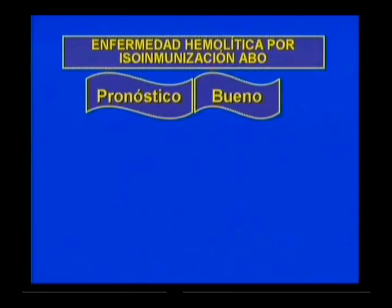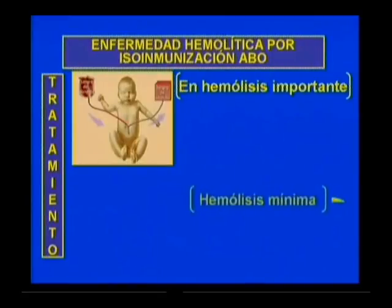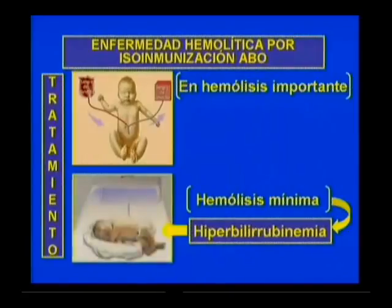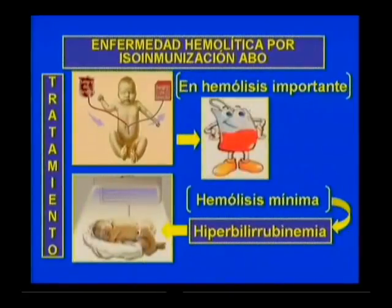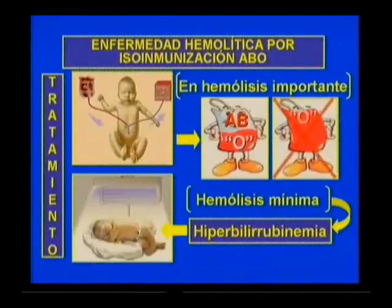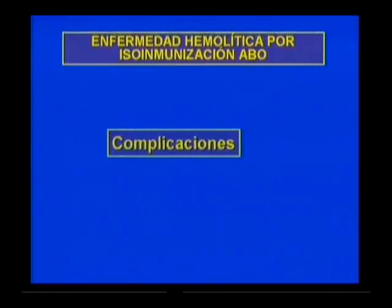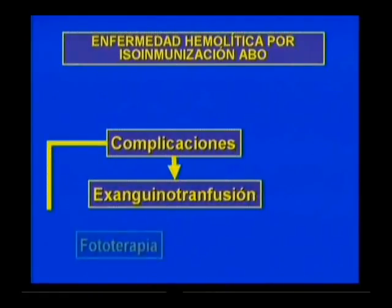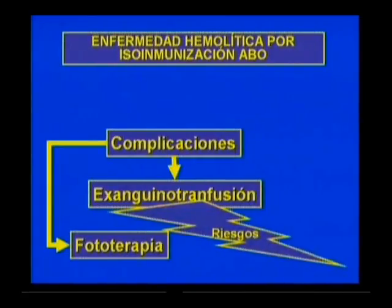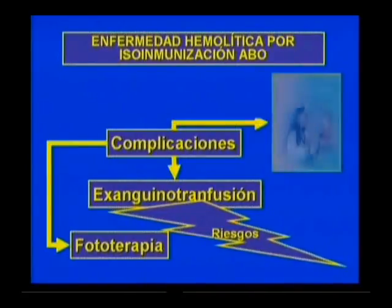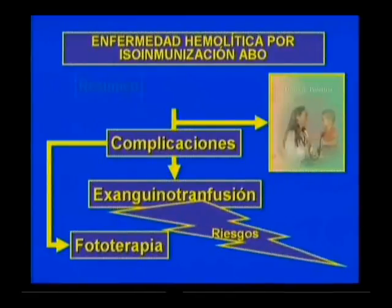El pronóstico es bueno si se diagnostica y trata oportunamente. En el tratamiento se empleará la exanguineotransfusión en los casos de hemólisis importante. Si la hemólisis es mínima, solo se disminuye la hiperbilirrubinemia con fototerapia. La sangre que se emplea es preferentemente una mezcla de glóbulos rojos suspendidos en plasma AB, que no tiene ni anti-A ni anti-B. No se utiliza sangre total grupo O, porque incrementa los niveles de anti-A y anti-B y puede agravar la enfermedad. Se recomienda revisar en el libro de texto las complicaciones de la exanguineotransfusión y de la fototerapia, ya que no están exentas de riesgos.